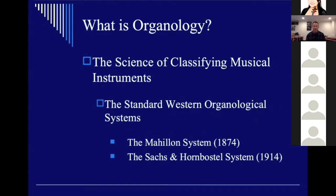We're talking tonight about the study of organology — organology is the science of classifying musical instruments. In the West there are two primary systems for organological classification: the Victor Mahillon system from around 1874, and then the Kurt Sachs and Erich von Hornbostel system, which is the more commonly used system, from about 1915.